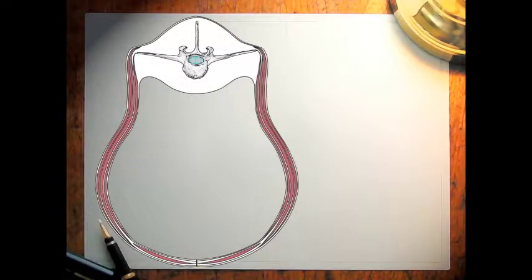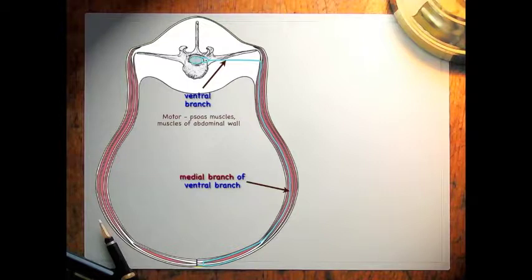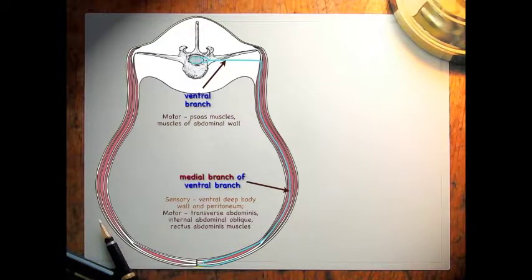Now let's put the muscles on there. Here's our ventral branch, coursing ventral to the transverse processes. It's going to innervate the psoas muscles as well as the dorsal aspect of the muscles of the abdominal wall. Its medial branch runs between the transverse abdominus and the internal abdominal oblique muscle, providing sensory to the ventral deep body wall and peritoneum, and motor innervation to the transverse abdominus, internal abdominal oblique, and rectus abdominus muscles.